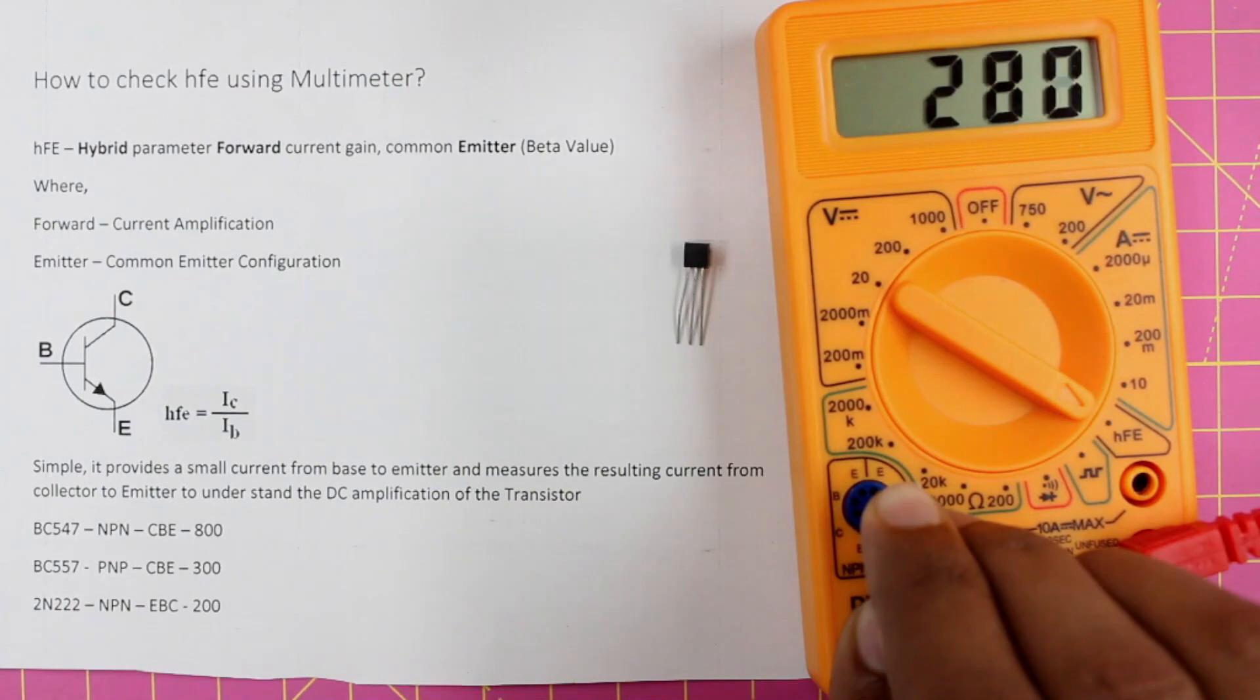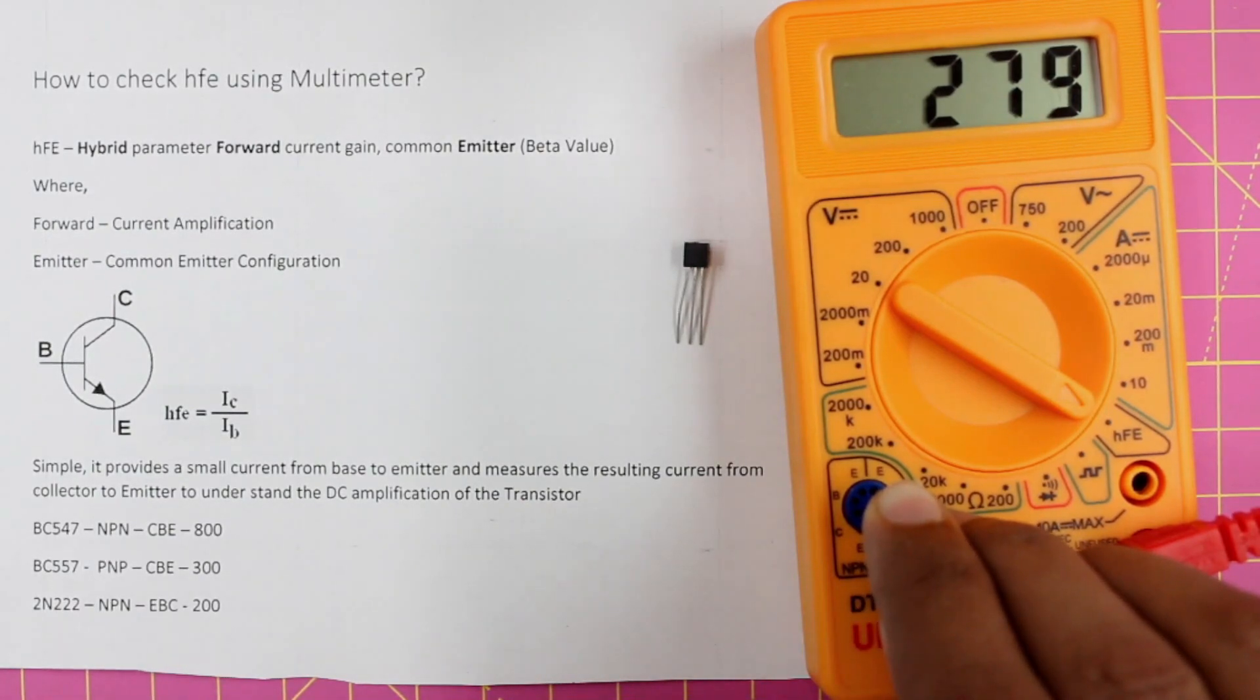When you do that, we will find the beta value of this transistor to be 279. So every transistor, even if the part number is the same, will have a different beta value. This method allows you to measure the exact beta value of your transistor. So this is within the 300 limit.